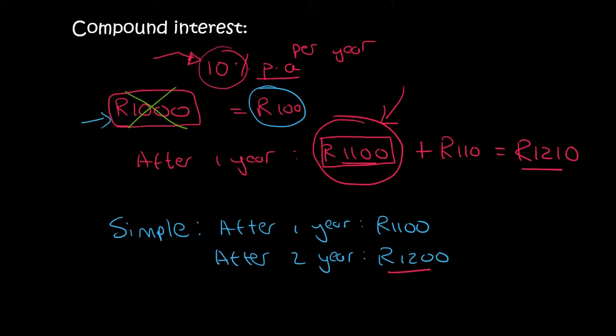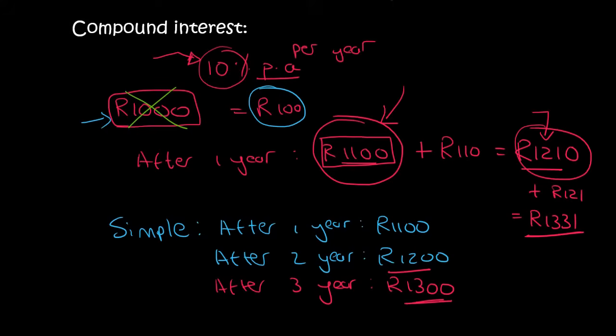If you had to go into year three, simple interest they would still just give you a hundred rand. In compound interest they would give you 10% of your new amount. That would be another 121 rand. And so now all of a sudden you have a thousand three hundred and thirty one rand. You see your money is starting to grow a lot faster using compound interest versus simple interest.